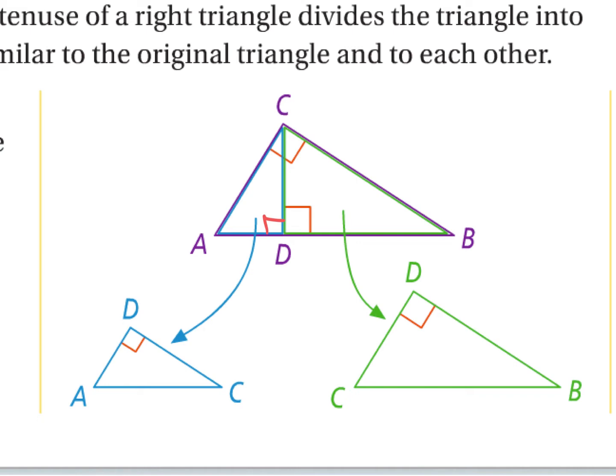So first off, if I look at the big right triangle, I see that I have my right angle up there at angle C. So I'm talking about angle ACB. And down here I've got angle A — I'm just going to mark it with a single arc. And over here I've got angle B, I'm going to mark it with a double arc. It doesn't matter which you mark with one or two; it's just marking them differently that's important.